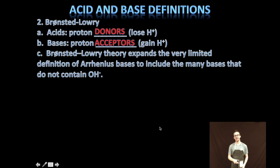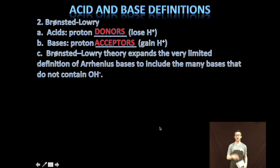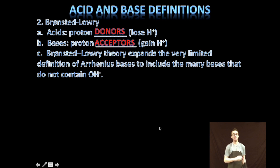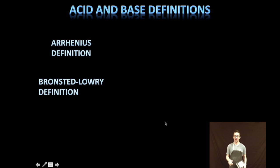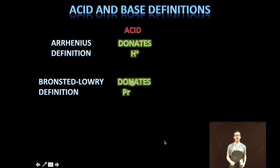That brings us to our second acid-base definition: the Bronsted-Lowry definition. Bronsted-Lowry defines acids as proton donors — they donate hydrogen ions. Bases are defined as proton acceptors — things that gain hydrogen ions. The Bronsted-Lowry definition expands the very limited Arrhenius base definition to include many bases that do not contain hydroxide ions. Note that the Arrhenius and Bronsted-Lowry definitions of an acid are actually very similar, since a hydrogen ion is a proton.